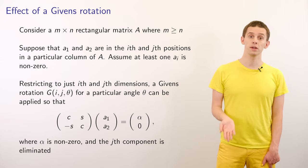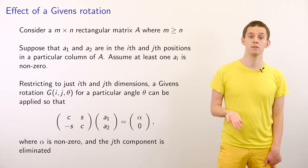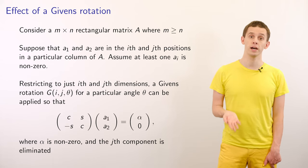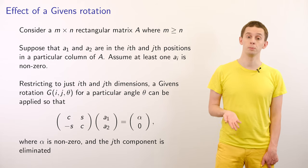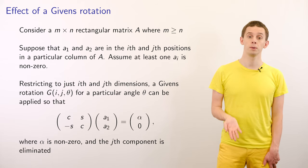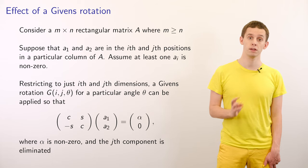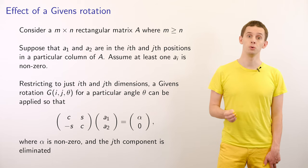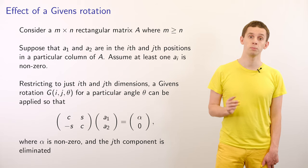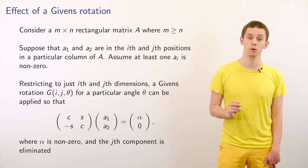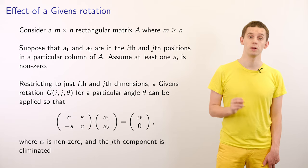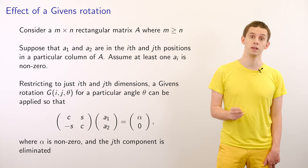So if we restrict to just the i-th and j-th dimensions, then a Givens rotation G(i,j,theta) for a particular angle theta can be applied so that our Givens rotation matrix applied to [a_1, a_2] will give back a vector with components alpha and 0, where alpha is non-zero and the j-th component is eliminated.